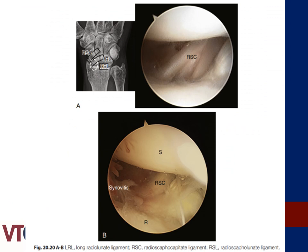You should always be able to identify your radioscaphocapitate ligament and your long radiolunate ligament. Depending on the anatomic variation of your patient, you may or may not be able to identify the short radiolunate ligament, as it sometimes hides along the volar aspect of the long radiolunate ligament and is not easily visualized from these dorsal portals. Here again is a picture identifying the relationship of the RSC and the long radiolunate ligament utilizing both x-ray and arthroscopic pictures, highlighting the variation that can be encountered.